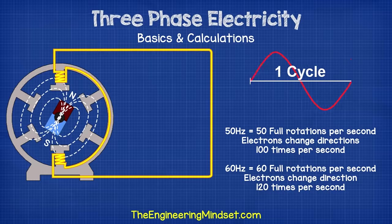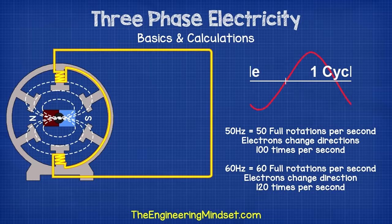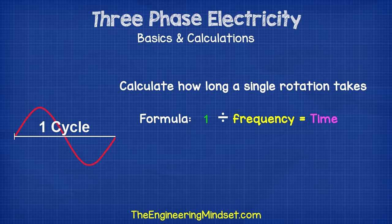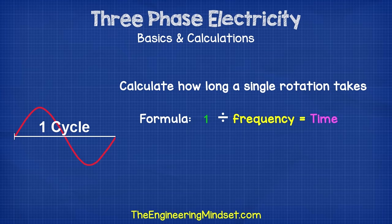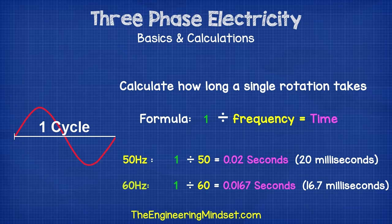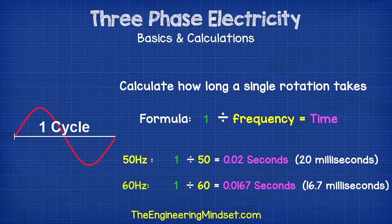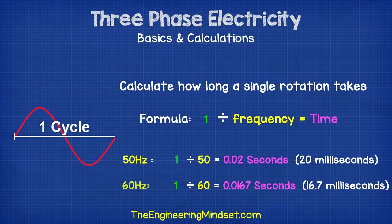As voltage pushes the electrons to create electrical current, the electrons change direction either 100 or 120 times per second. We can calculate how long it takes for a single rotation to complete using the formula T (time) = 1 / F (frequency). A 50 hertz supply therefore takes 0.02 seconds or 20 milliseconds to complete. A 60 hertz supply takes 0.0167 seconds or 16.7 milliseconds.